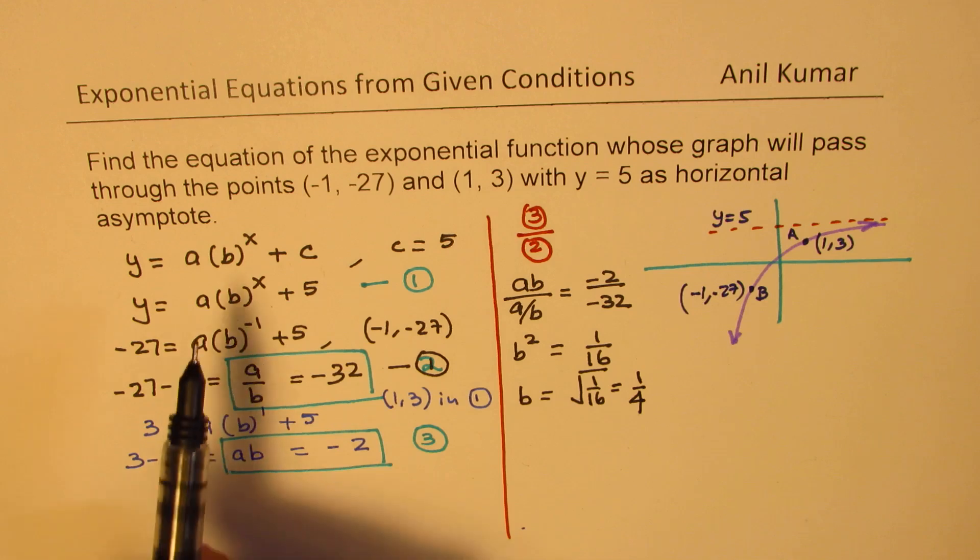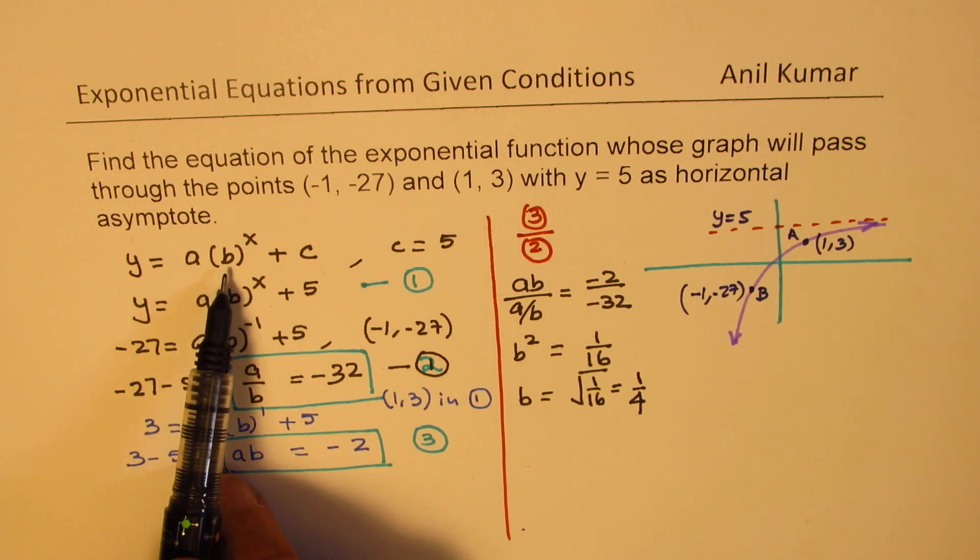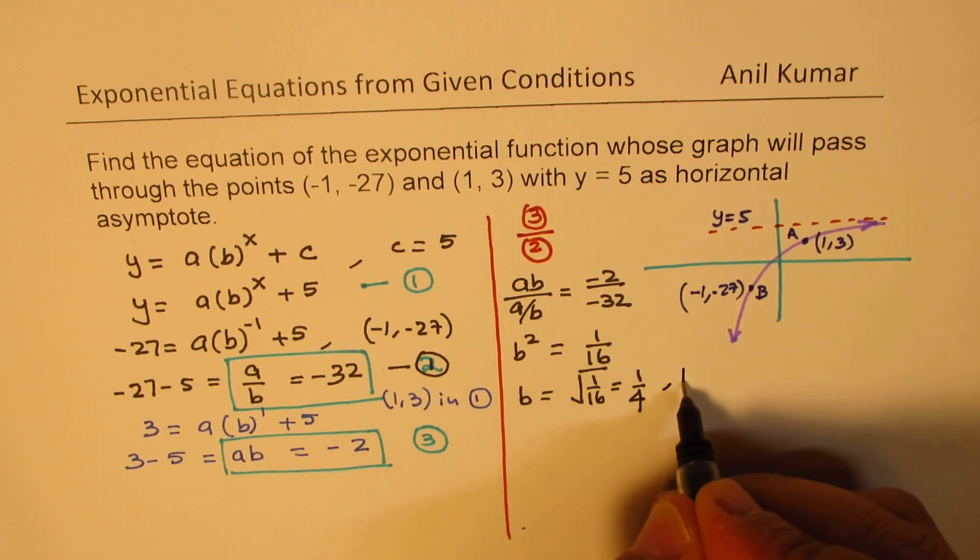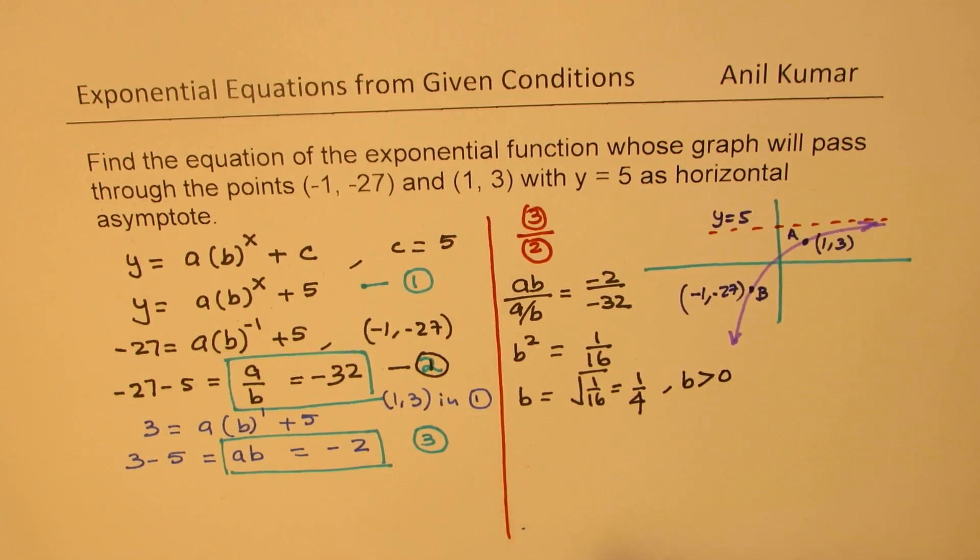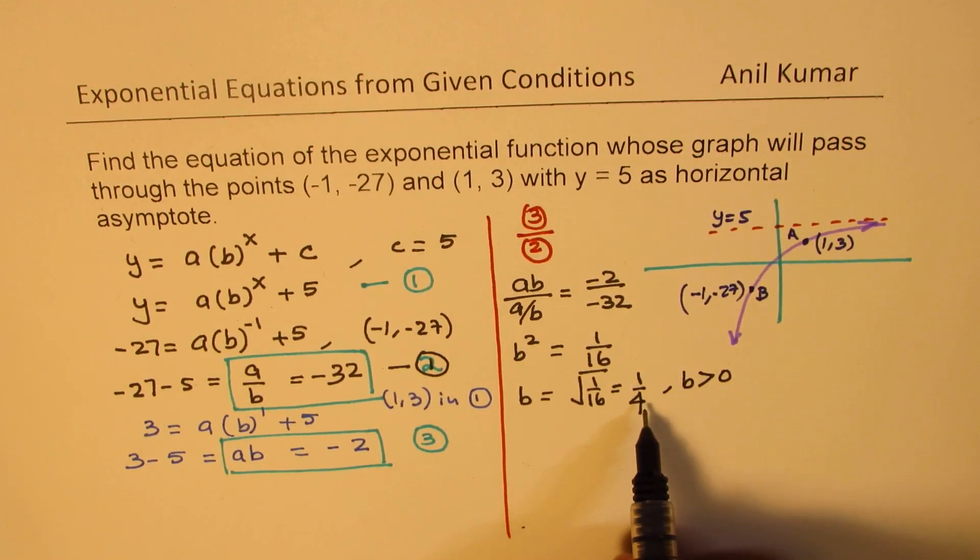Now in exponential functions, you know b has to be greater than zero. Since we know b is greater than zero and not equal to one, we have to take the positive value.